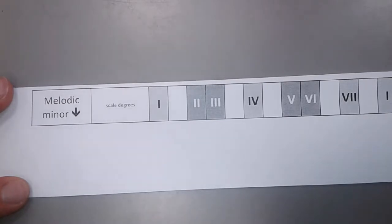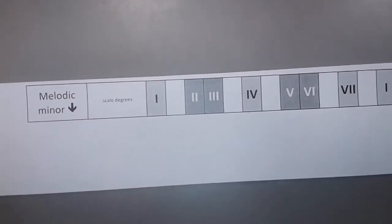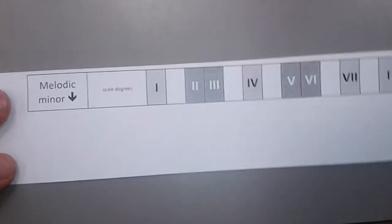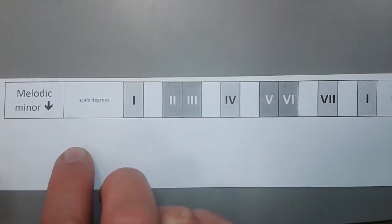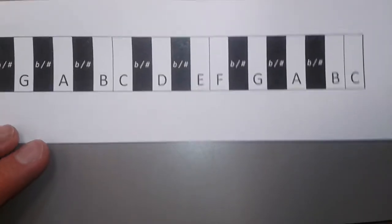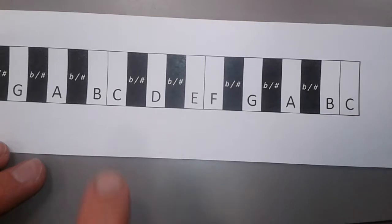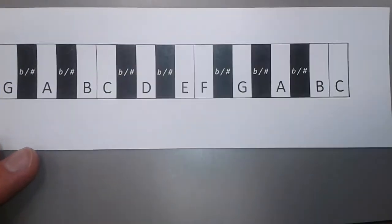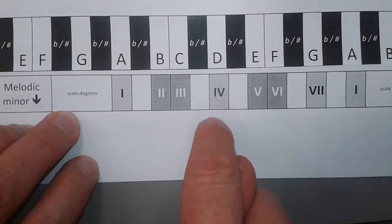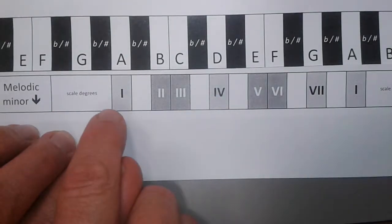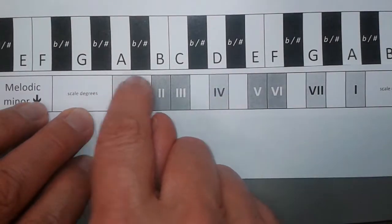Right, this descending version is also called the natural minor. And the point is that it is this scale that is exactly the same as the key signature. So, after working out the major scale from C to C on the white notes, we can now work out this set of notes from the white notes A to A.